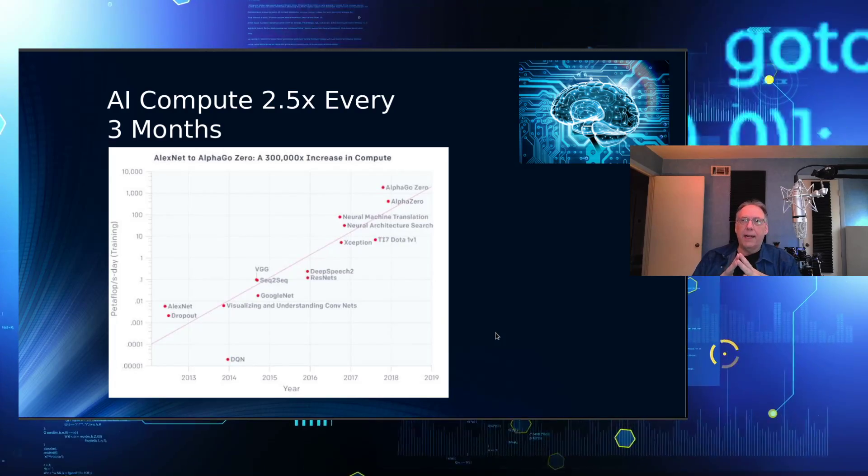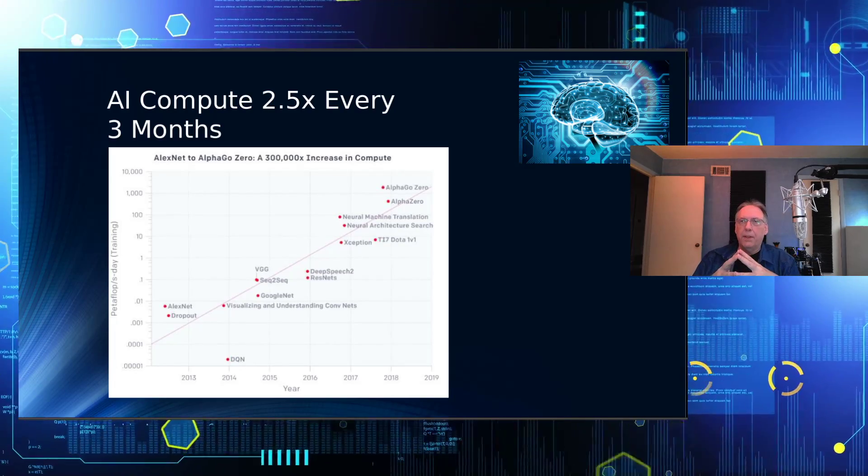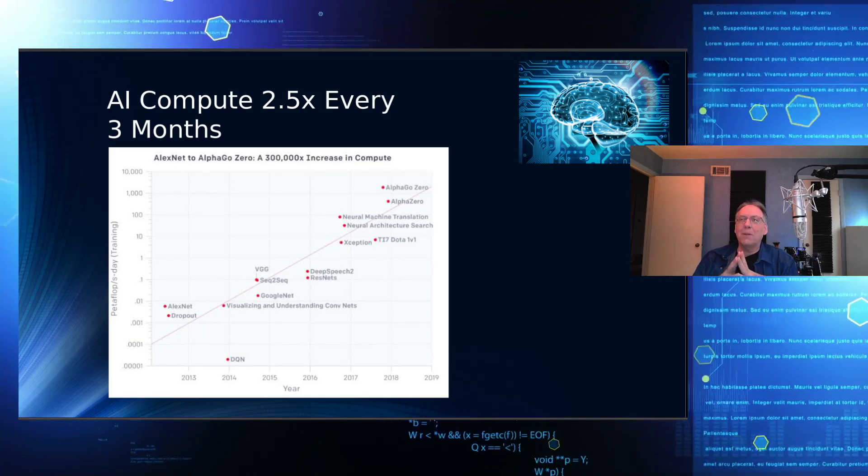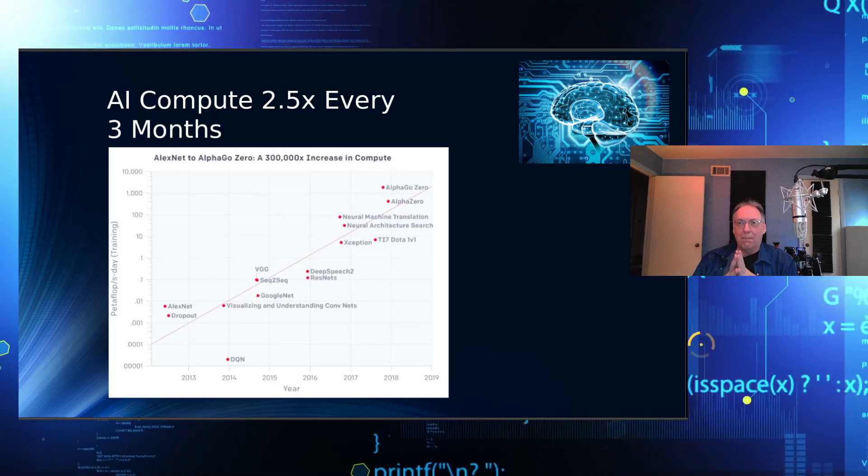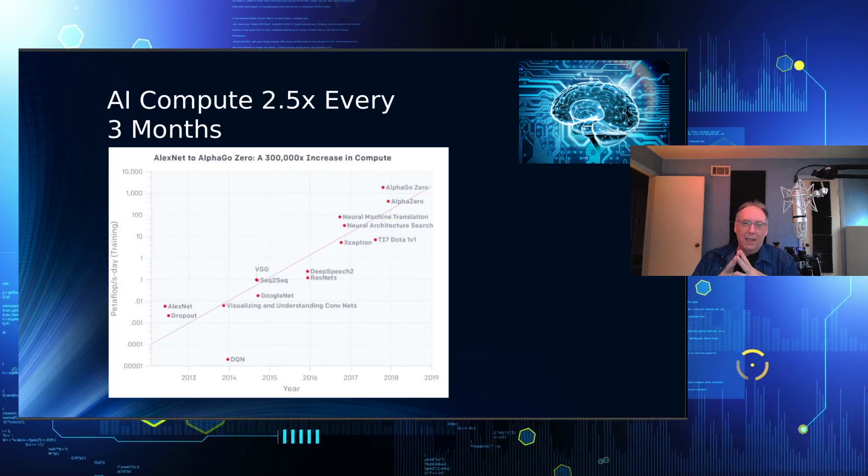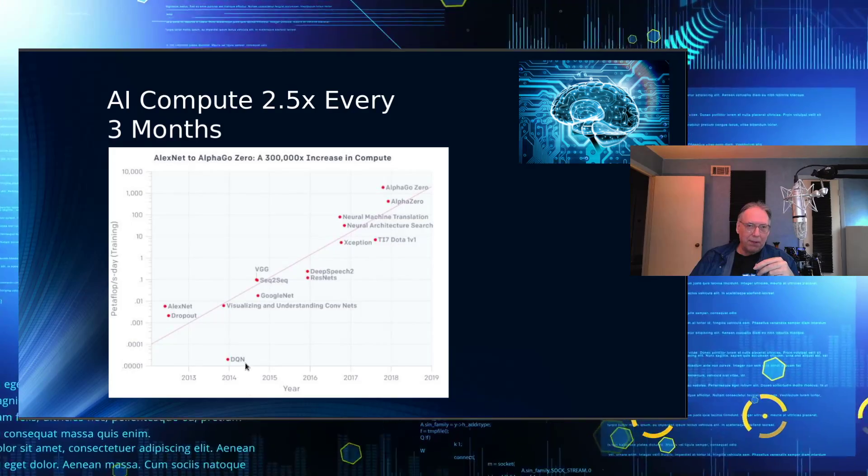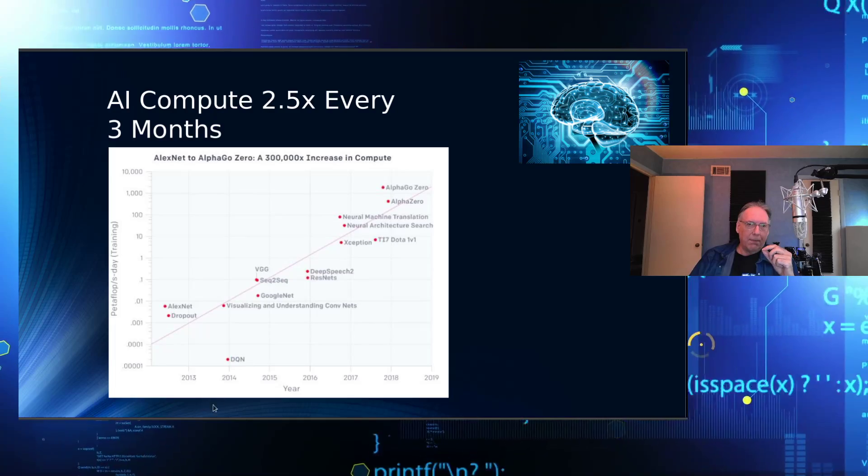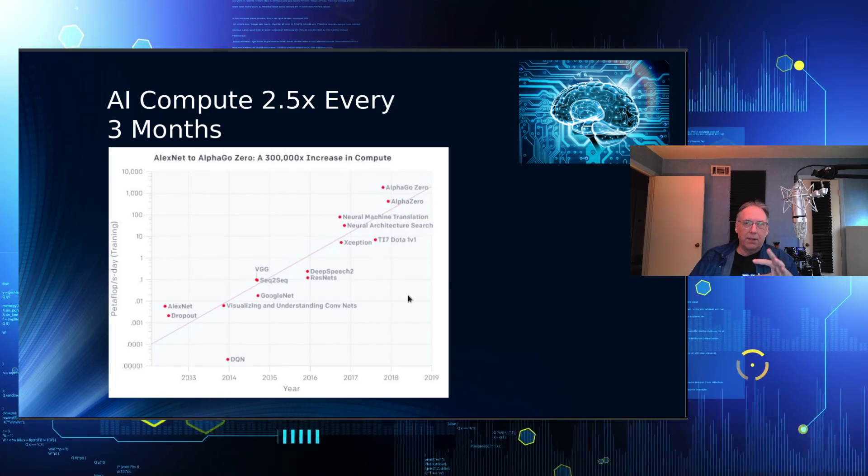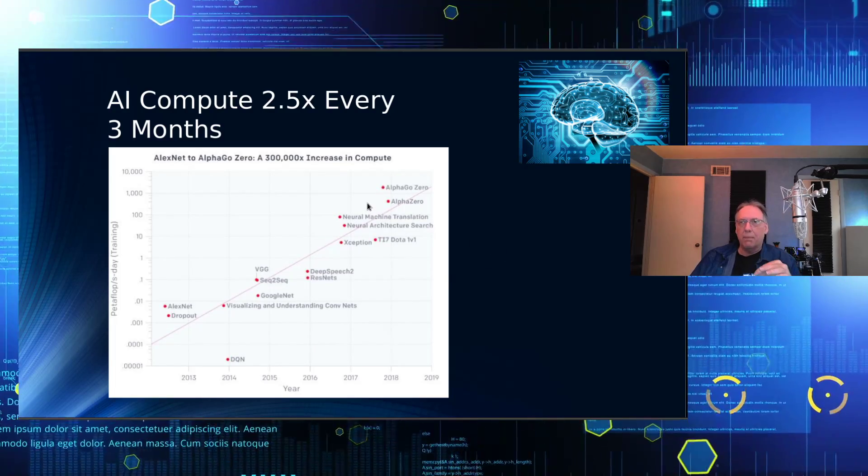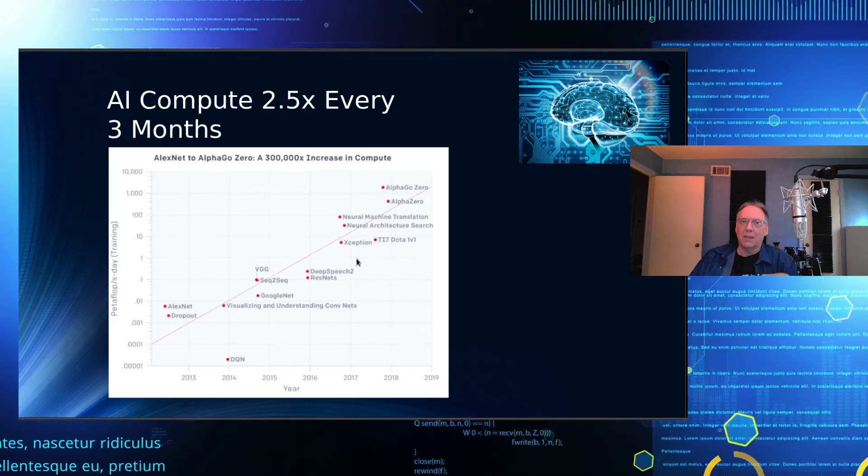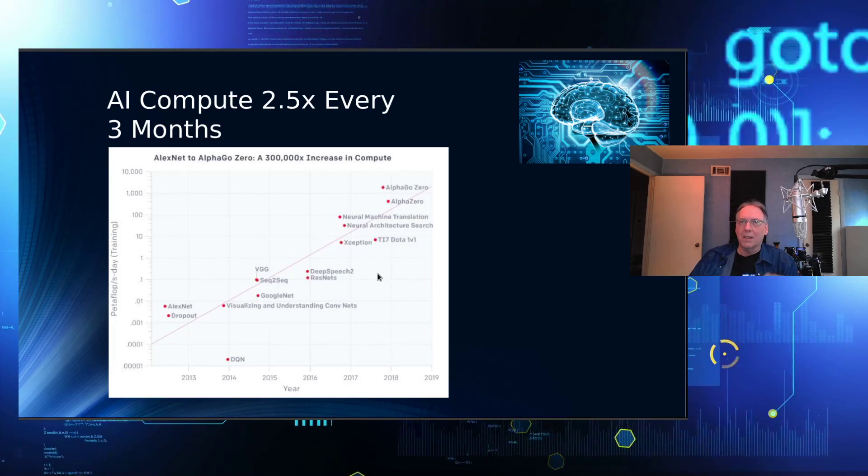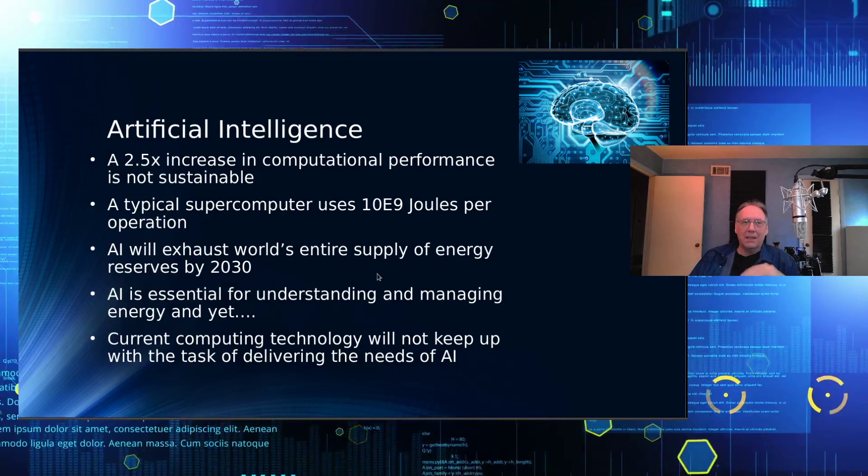So the other thing in AI that's occurring is that computing requirements are increasing at about two and a half times every three months. And over the past, from about 2013 until now, the amount of computing requirements have increased over 300,000 times. Companies are trying hard to deliver that, but that's not sustainable.